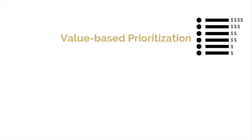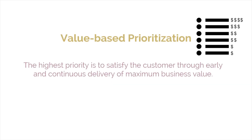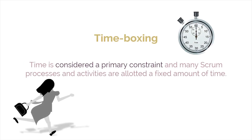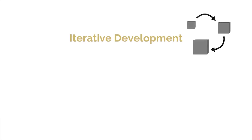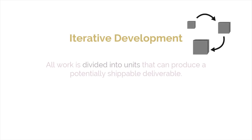Value-based prioritization, in which the highest priority is to satisfy the customer through early and continuous delivery of maximum business value. Time-boxing, in which time is considered a primary constraint and many Scrum processes and activities are allotted a fixed amount of time. And iterative development, in which all work is divided into units that can produce a potentially shippable deliverable.